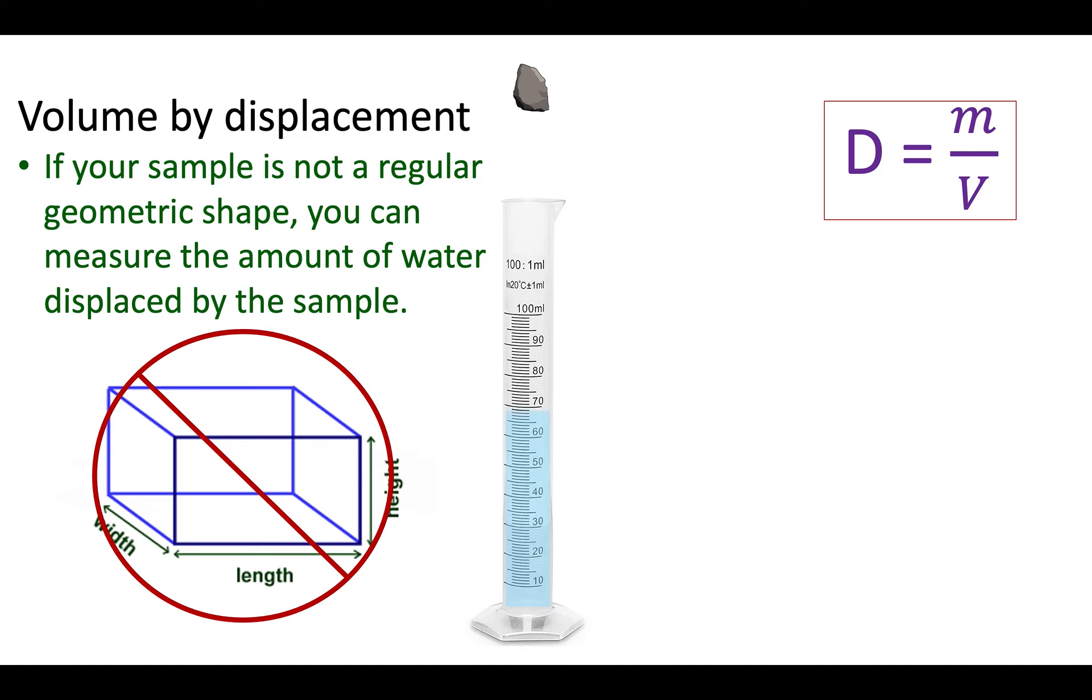It's a real simple system. You all know how to use a graduated cylinder. What you do is you put enough water in the graduated cylinder, not to the top, but enough to completely submerge the object you want to measure the volume of.